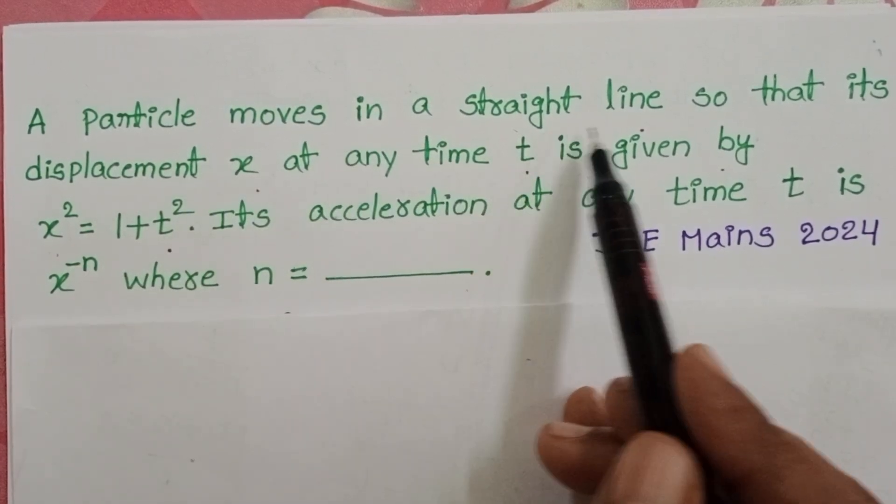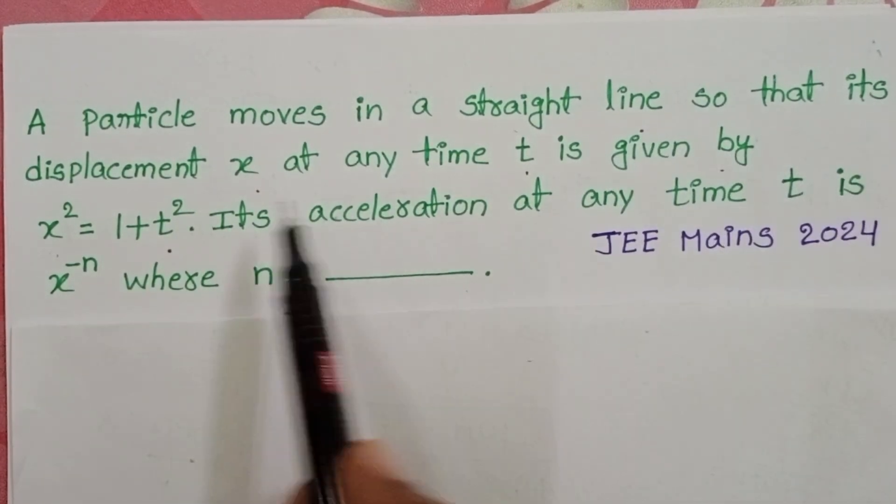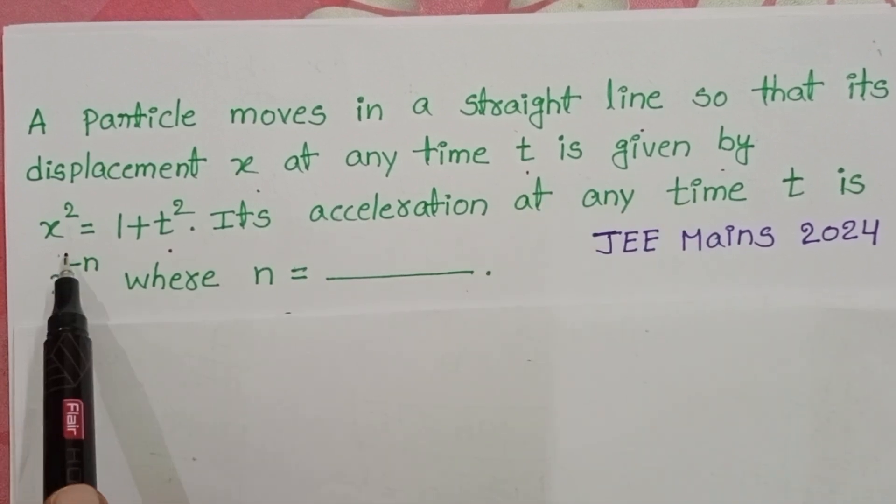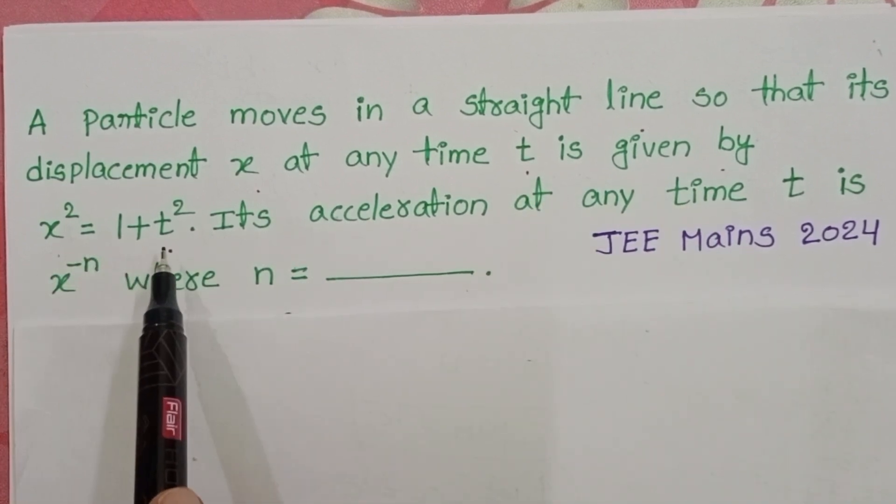A particle moves in a straight line so that its displacement x at any time t is given by x² = 1 + t².